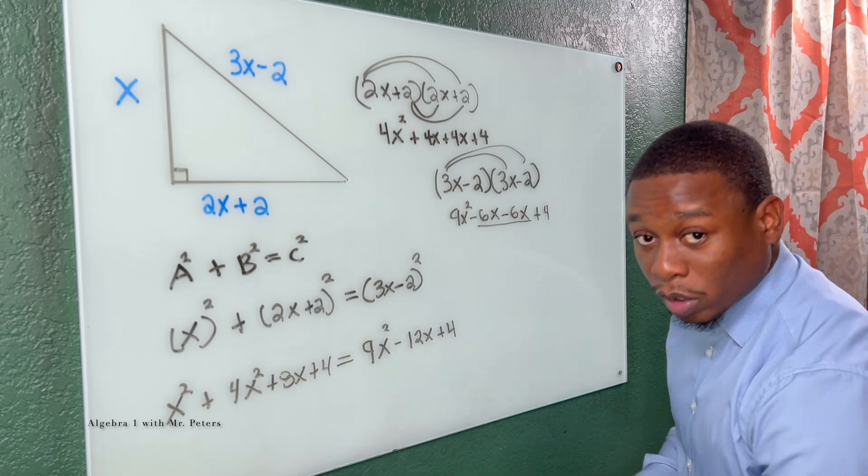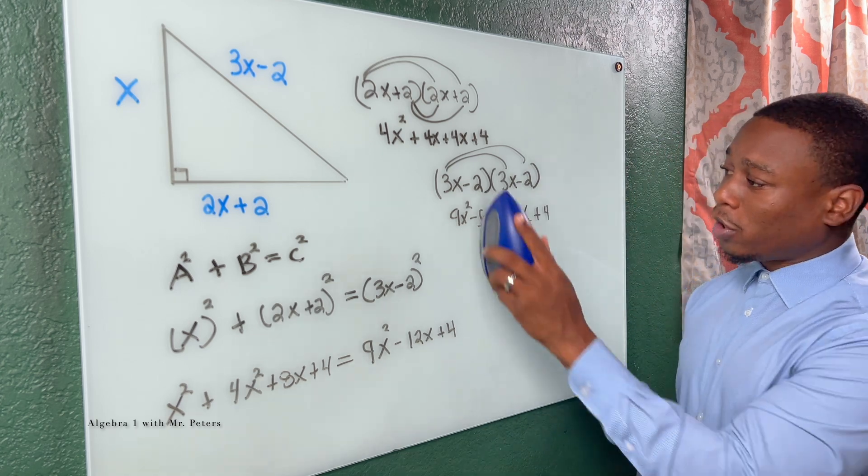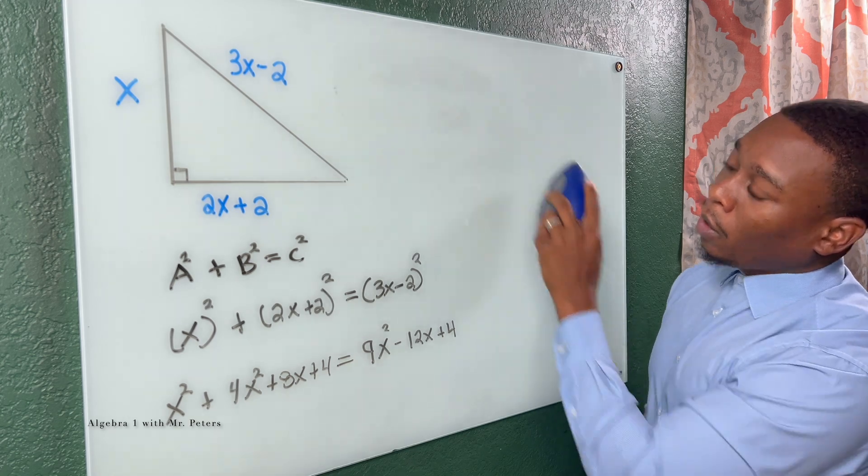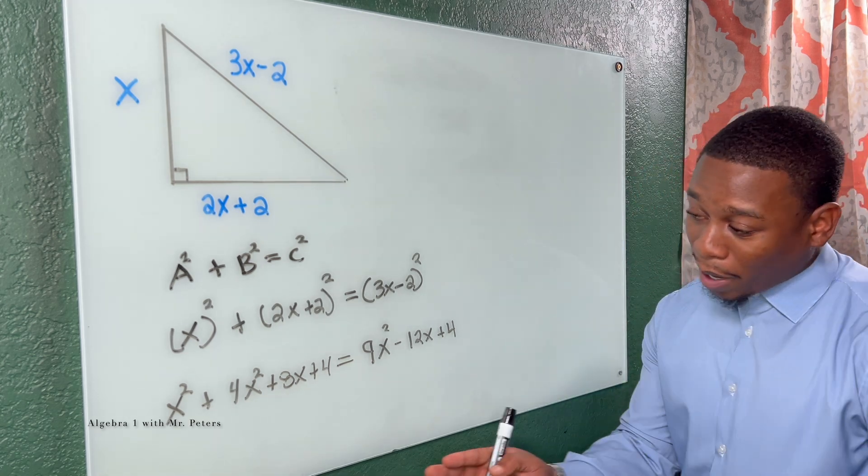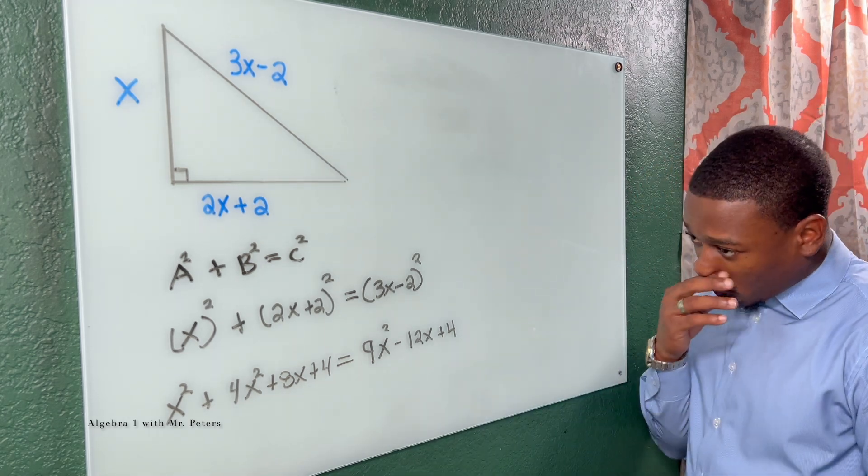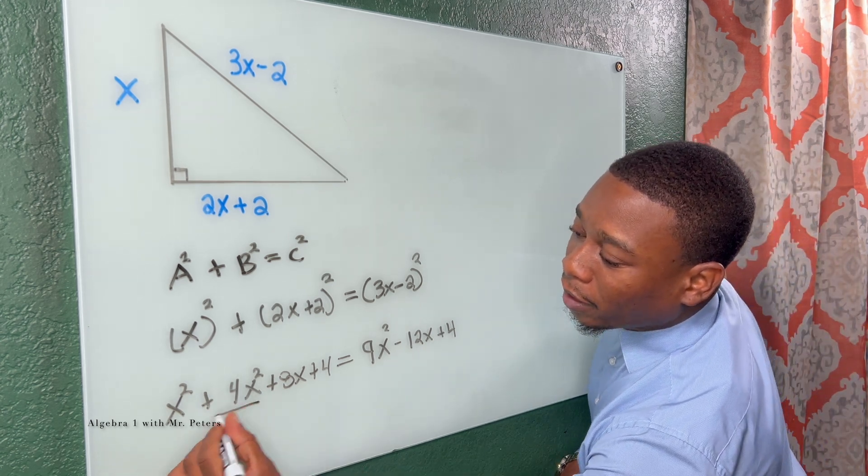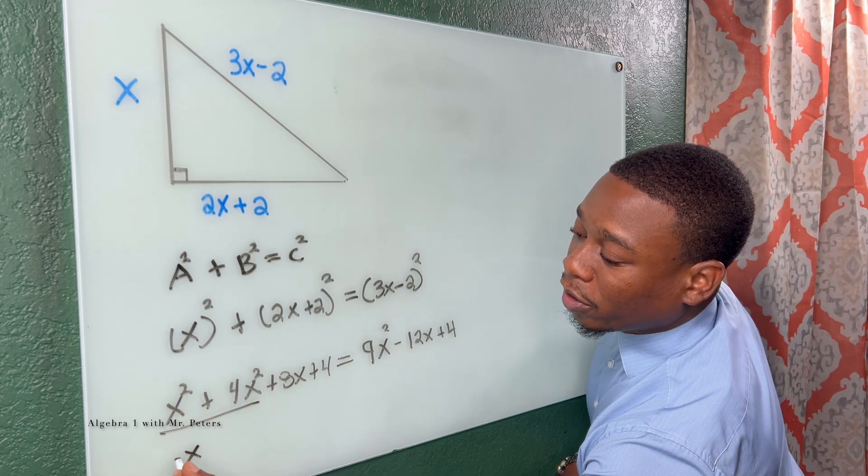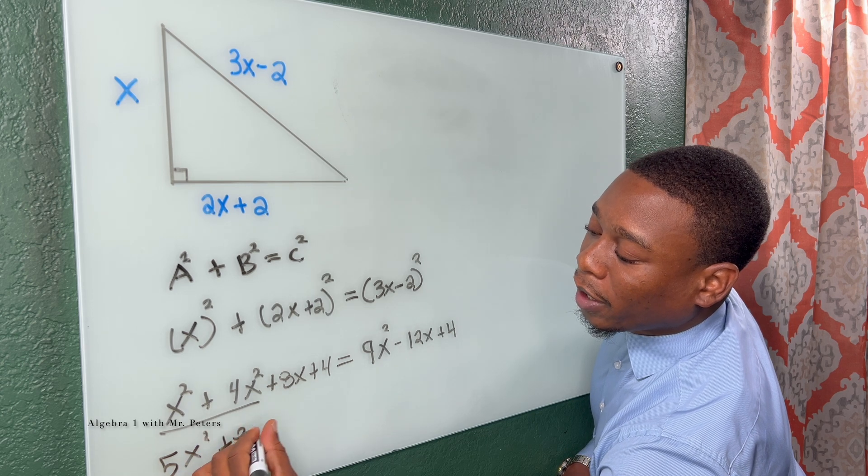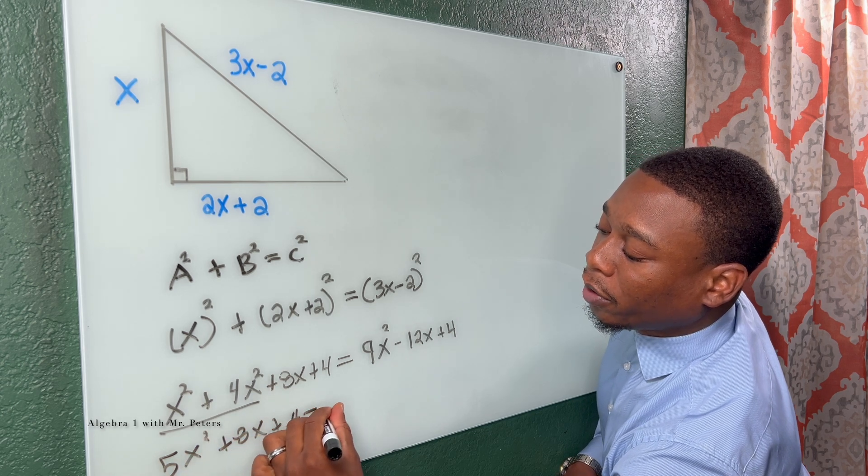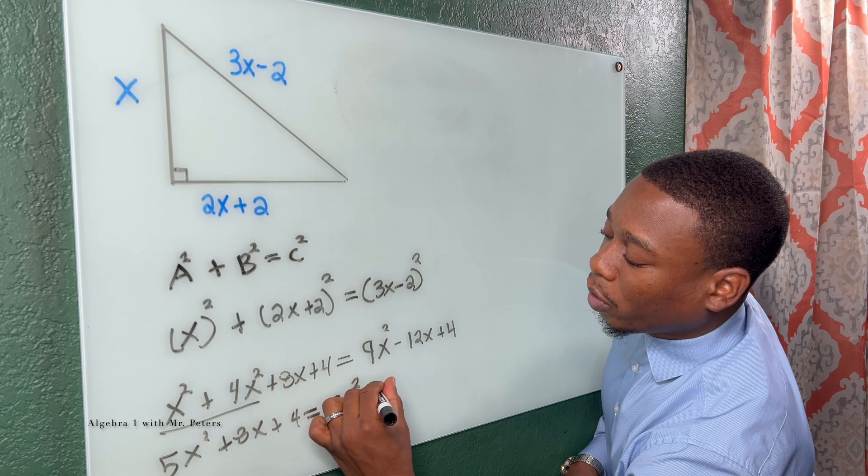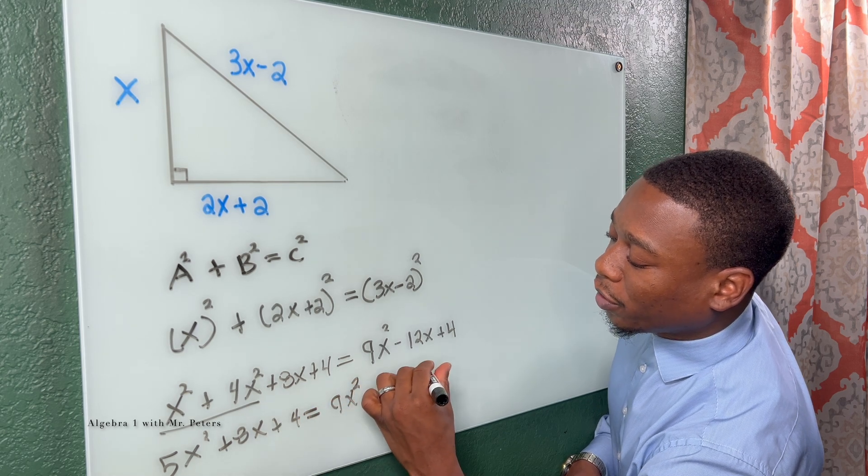Now at this step, we took everything correctly to the second power and we can now start combining our like terms. So what I'm going to want to do is just add these two. So this turns into 5X squared plus 8X plus 4 is equal to 9X squared minus 12X plus 4.